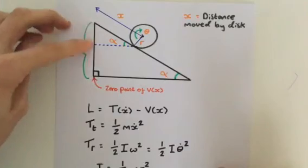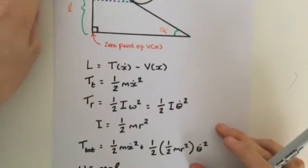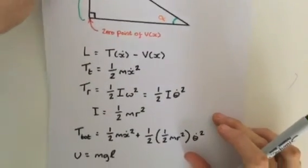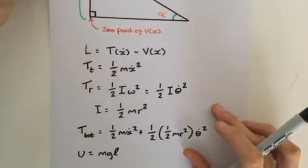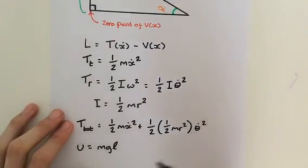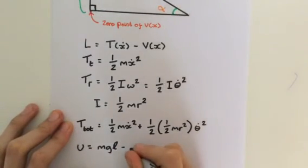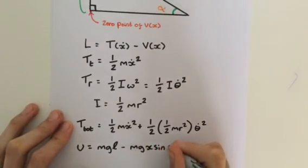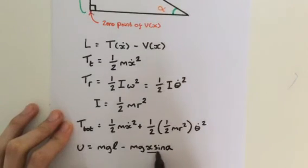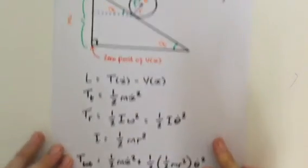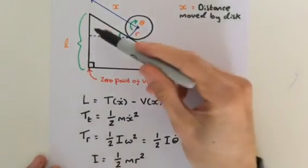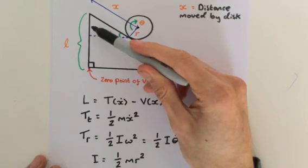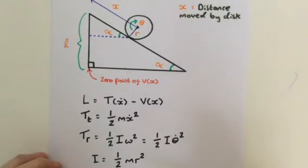What we can say for this distance here is that the potential energy U is mgl, and then we're going to minus mg x sine alpha. x sine alpha is that distance here.